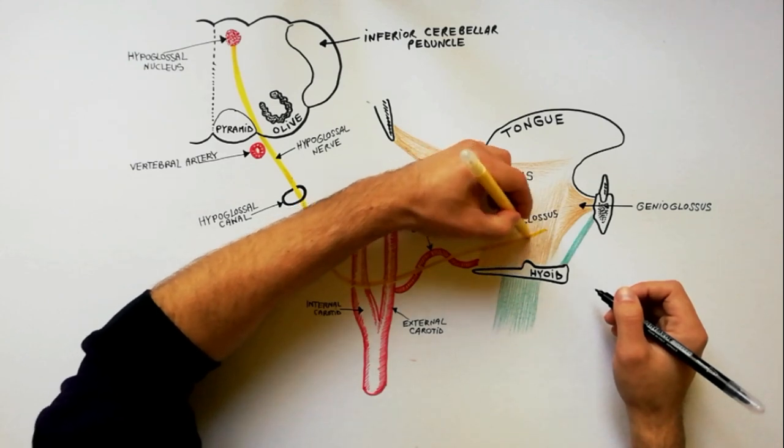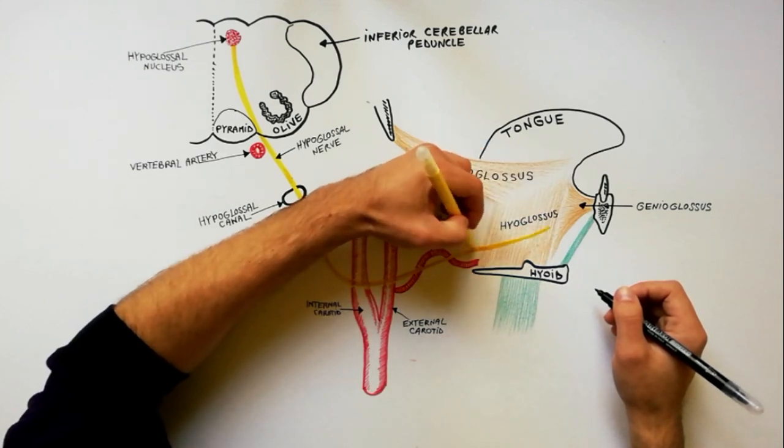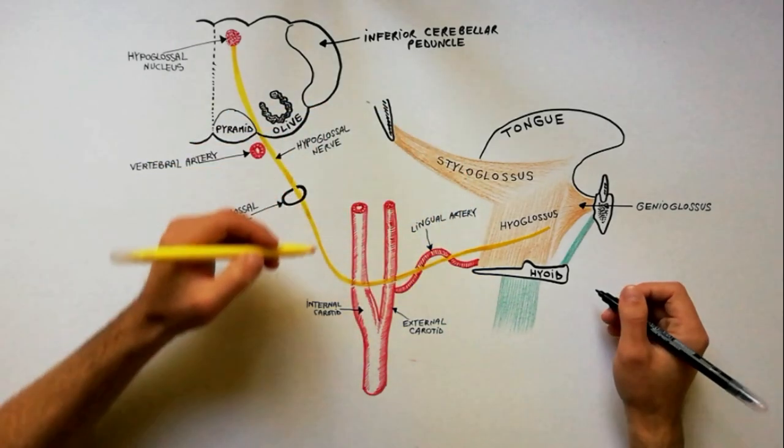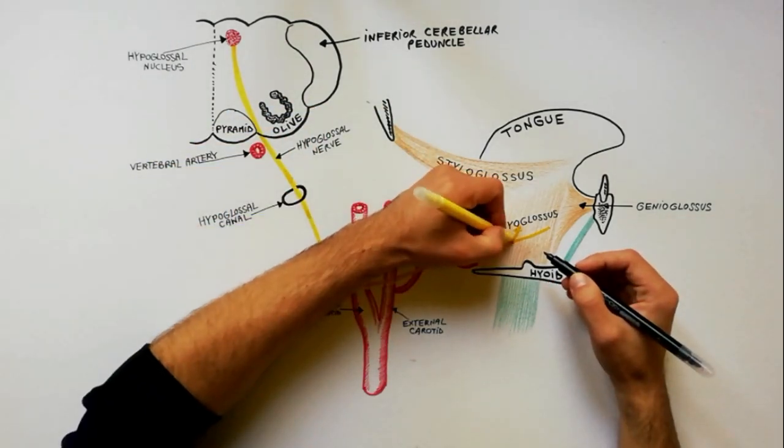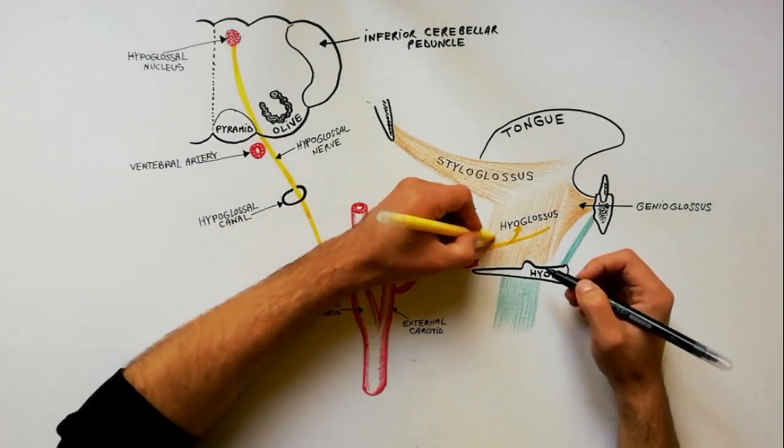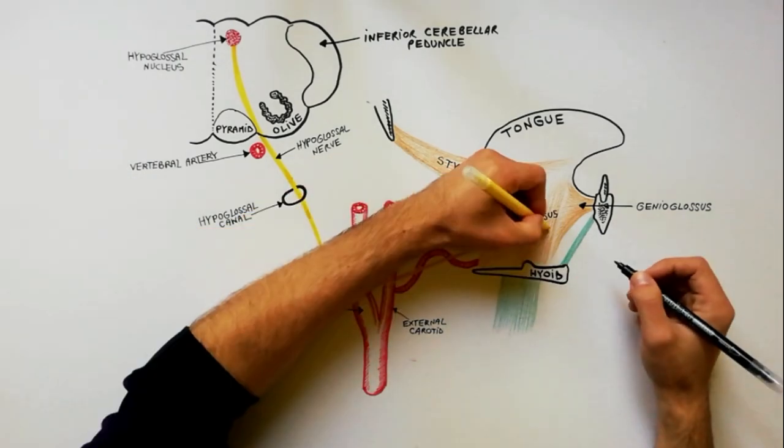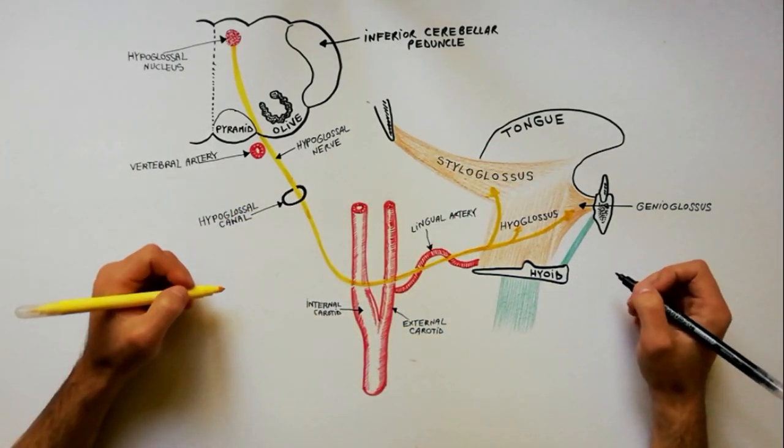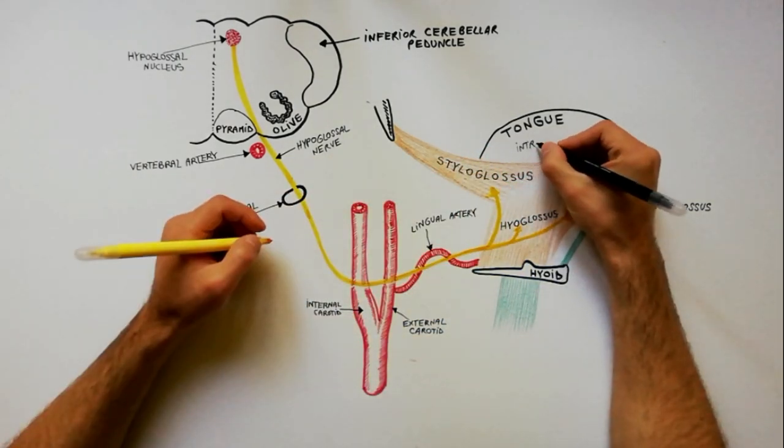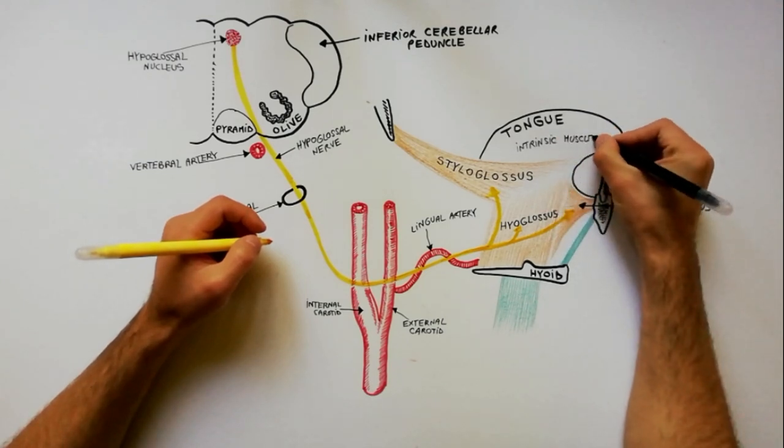And gives off branches to three of the four extrinsic muscles of the tongue: branch to hyoglossus muscle, branch to styloglossus muscle, and branch to genioglossus muscle. It also gives branches to all intrinsic muscles of the tongue.